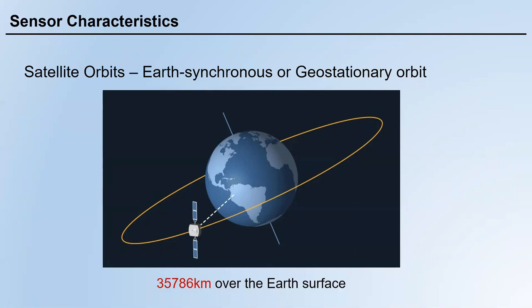The disadvantage of this type of orbit is that you cannot see other areas around the Earth. Usually, one geostationary satellite can cover one-third of the Earth's surface. So if you launch three geostationary orbit satellites, theoretically you can cover the whole surface of the Earth, since each one covers one-third.